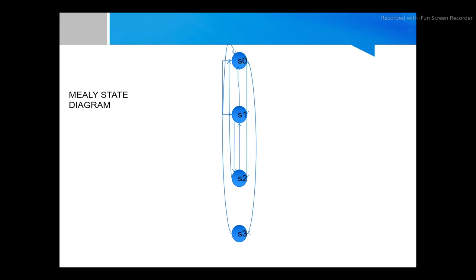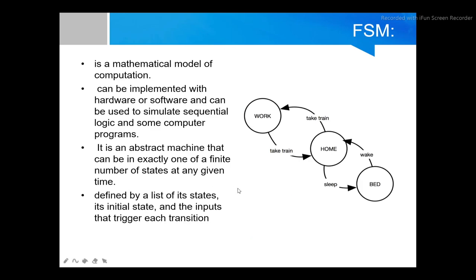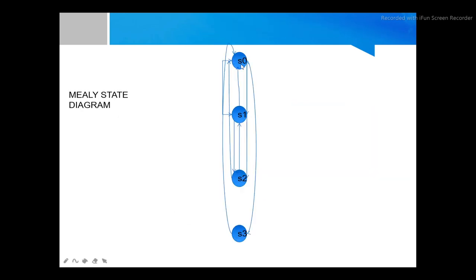The coin denominations we use are 5 cents and 10 cents. Starting from S0, if I insert 5 cents it goes to S1. From S1, if I insert another 5 cents it goes to S2 (10 cents), and I get a drink, then it returns to S0. If I go from S0 to S1 but insert no more coins, it goes back to S0. If I insert only 5 cents and take it out, it returns to S0.